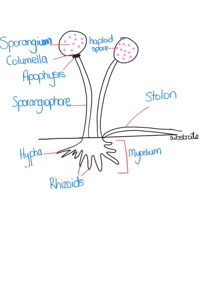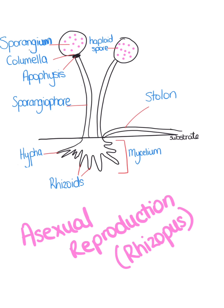During asexual reproduction of the Rhizopus, the sporangium bursts and releases its haploid spores. Each spore blows away and grows into a new hyphae and mycelium if it lands on a suitable substrate.